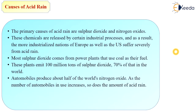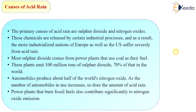Automobiles produce about half of nitrogen dioxide emissions. As the number of automobiles in use increases, so does the amount of acid rain. Power plants that burn fossil fuels also contribute significantly to nitrogen oxide emissions. These are the main sources of sulfur and nitrogen oxide emissions.